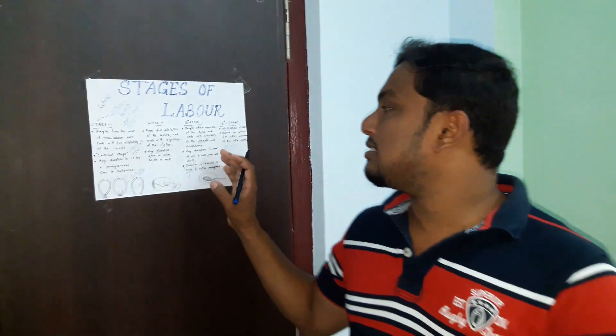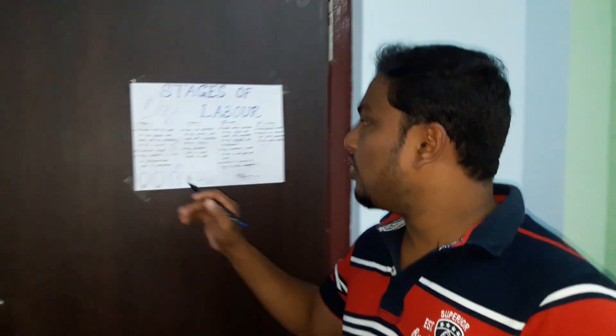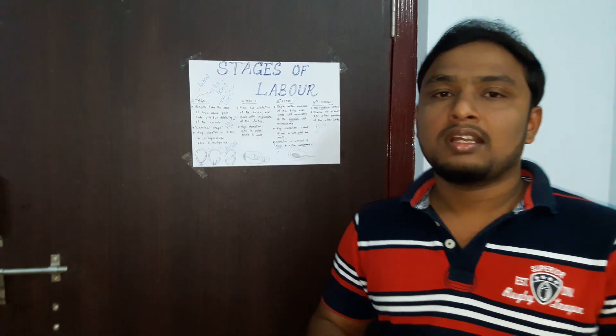These are the four stages of labour. In a quick review: Stage 1 starts from true labour pains and ends at complete dilatation of the cervix up to 10 centimeters. Stage 2 goes from 10 centimeter dilatation to the delivery of the baby. Stage 3 is the delivery of the placenta. Stage 4 is the observational phase. Thank you, hope you like this video.